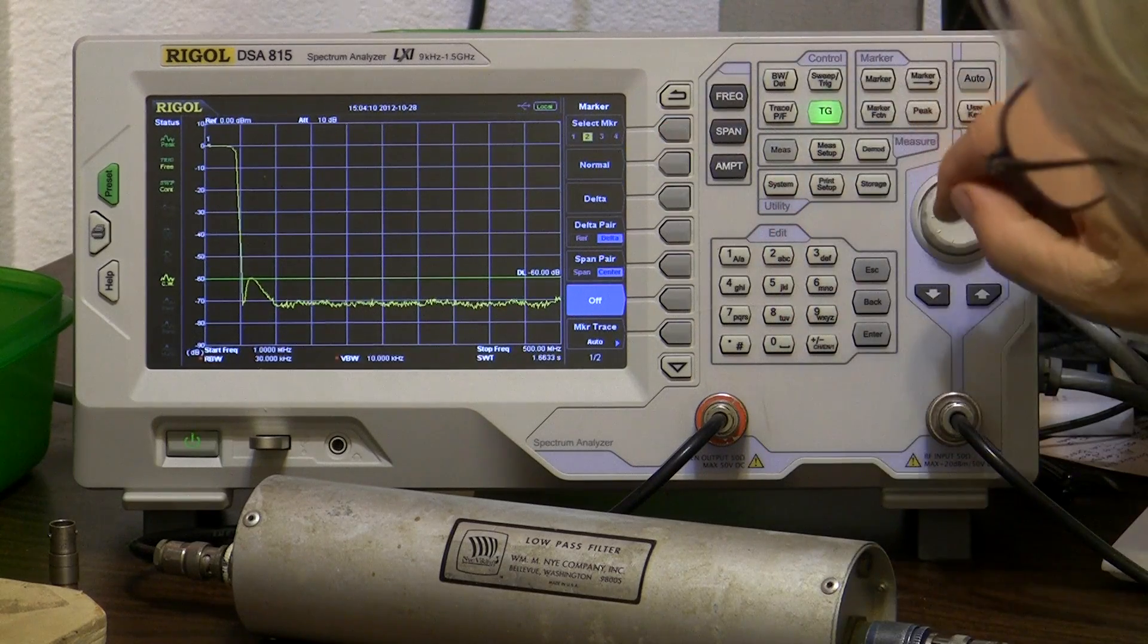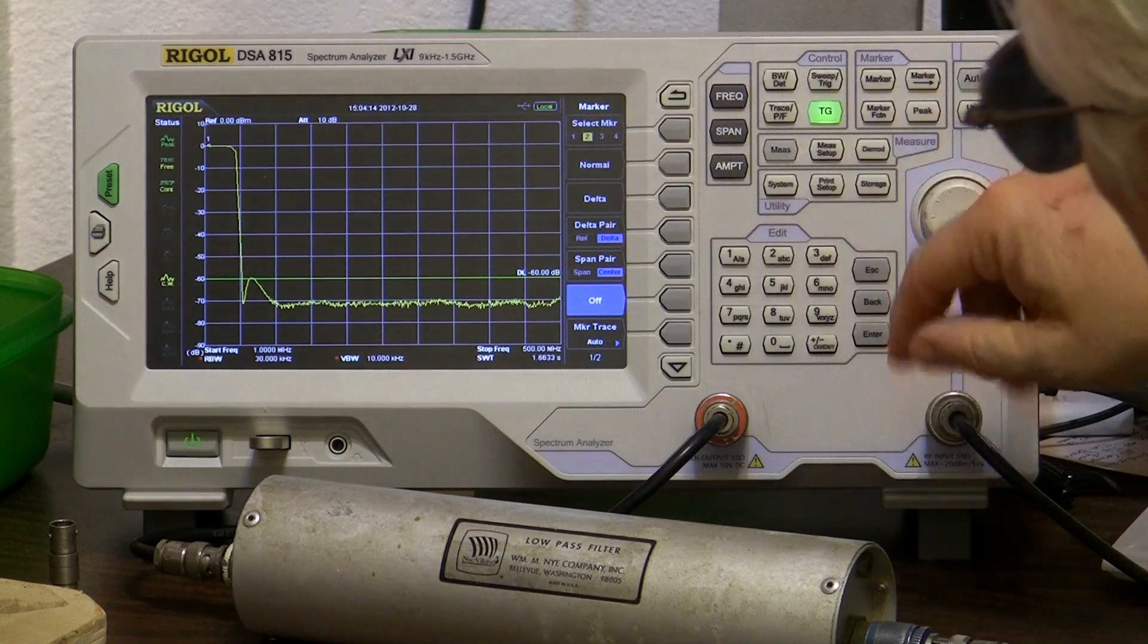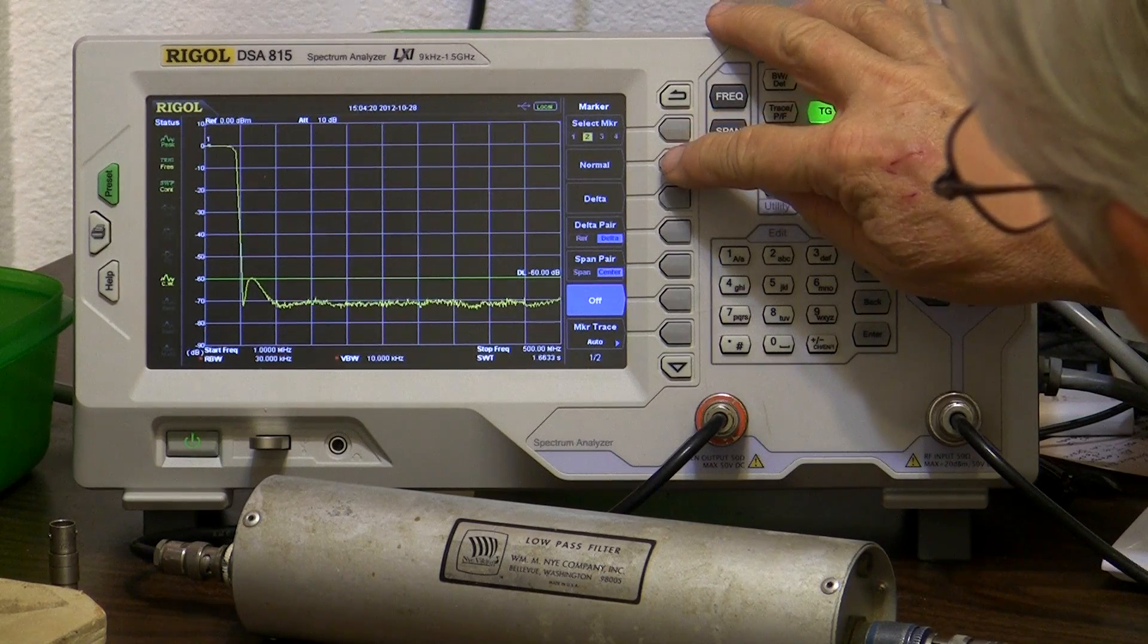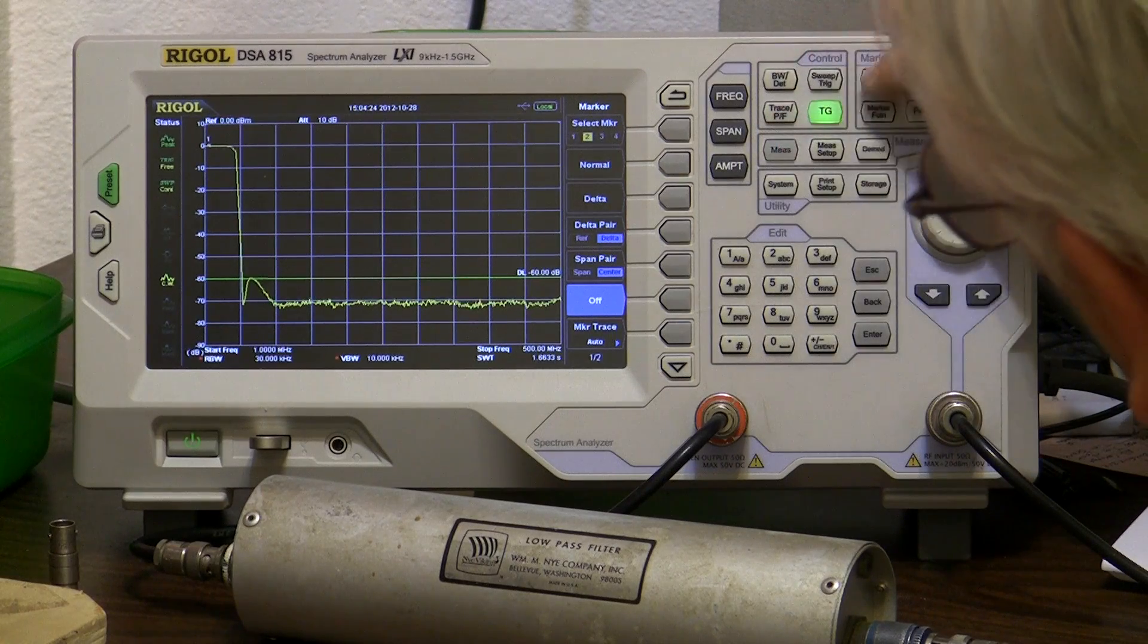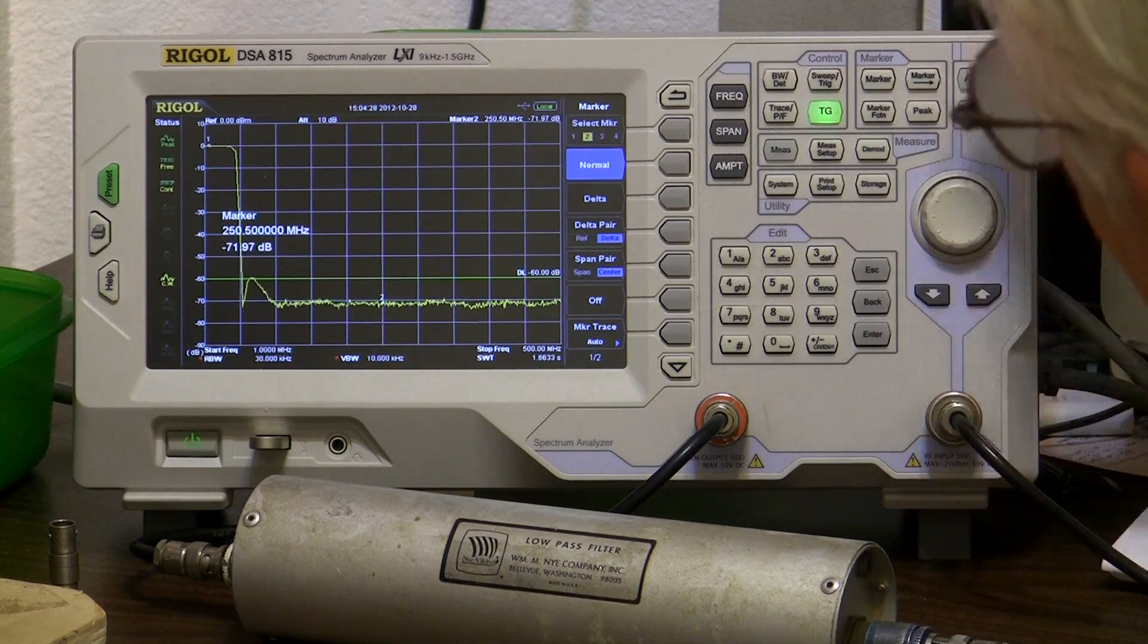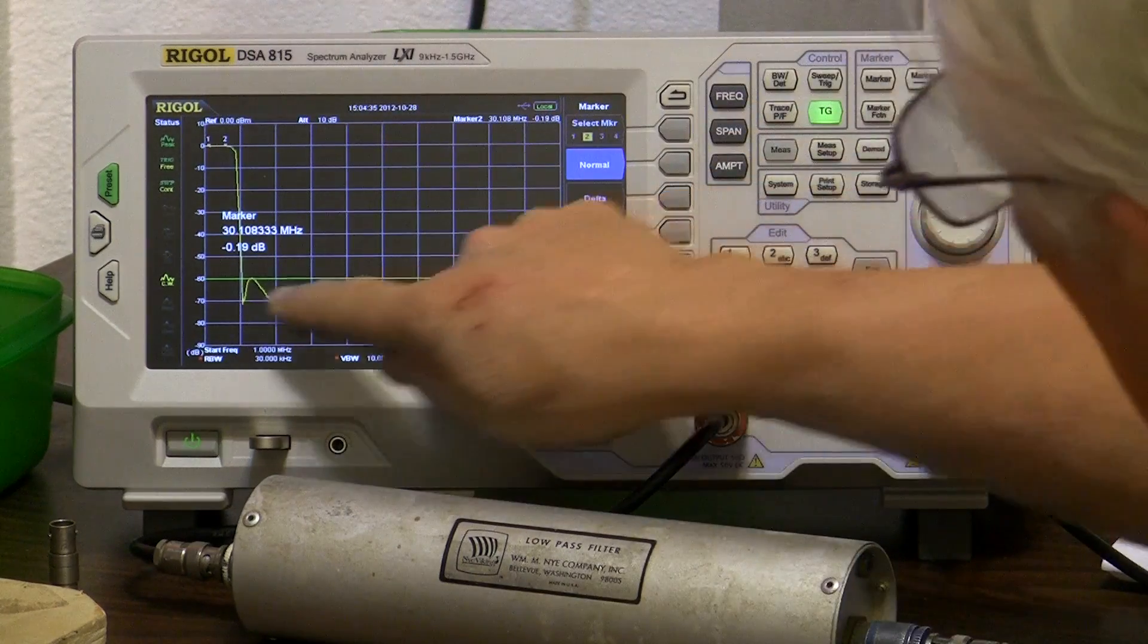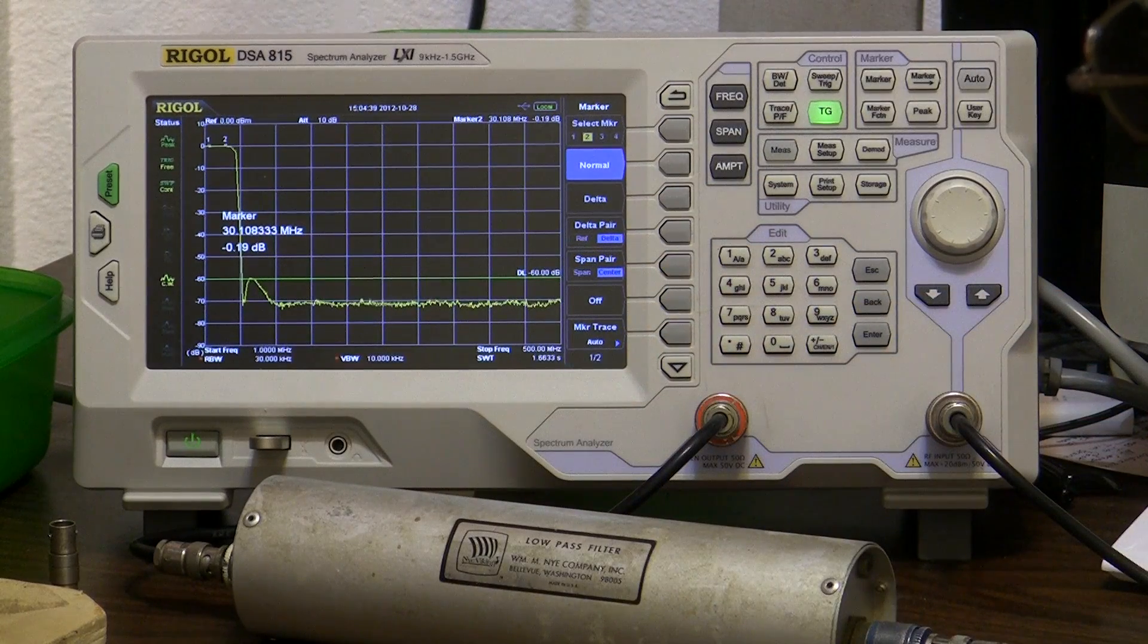Marker two, we'll put it at 30 megahertz. That's the highest we do in amateur radio at least. So two we'll say 30 megahertz. Gotta turn it on. And then 30 megahertz. There we are at 30 megahertz, 0.19, so actually a little bit better at 30 megahertz.